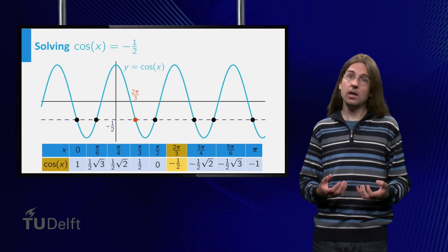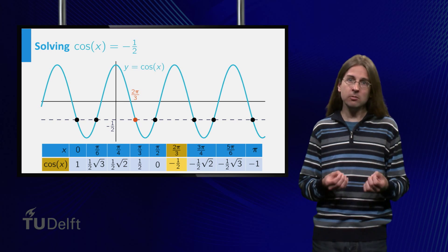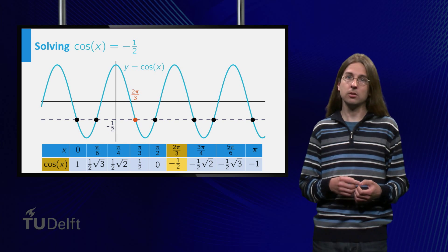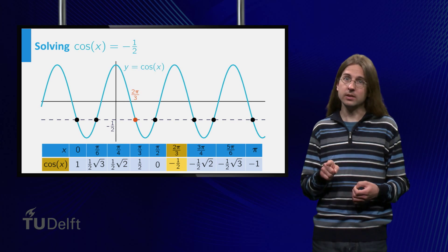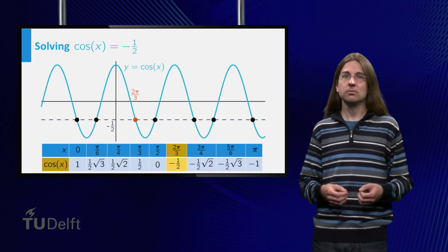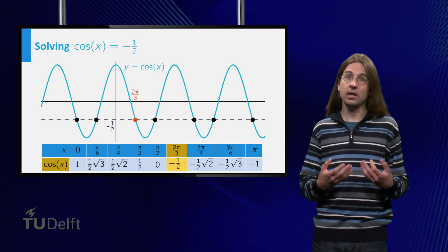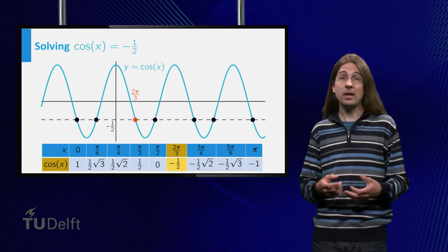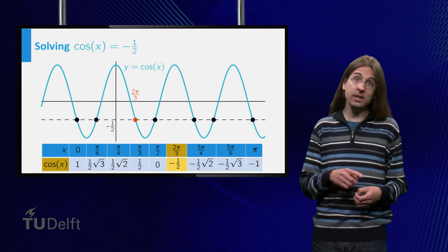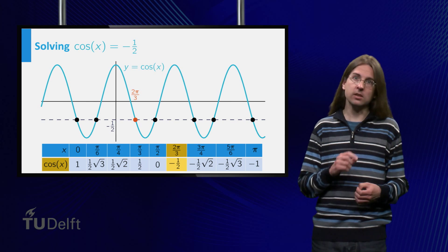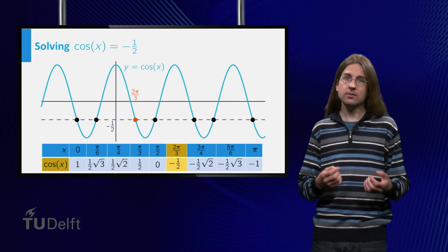Another symmetry of the graph shows that those values mirror the values of the cosine from 0 to π/2, but with a minus sign. Thus we see that cos(π/3) = 1/2 implies that cos(π - π/3) = -1/2. This gives our first answer.